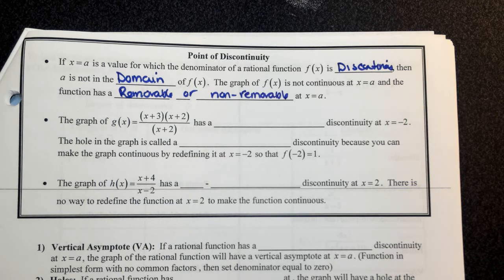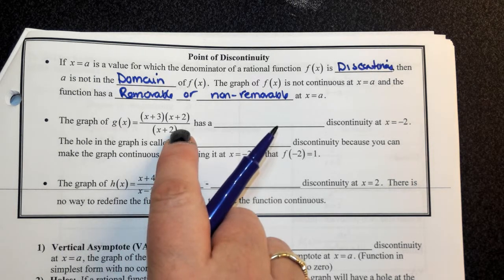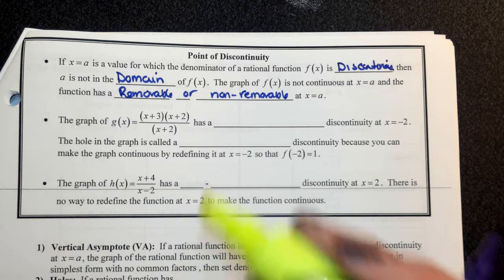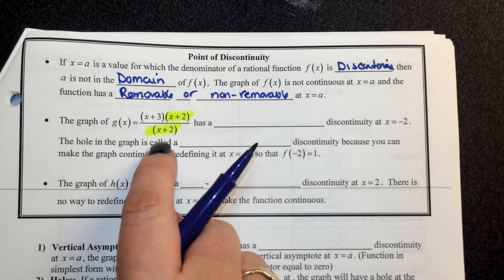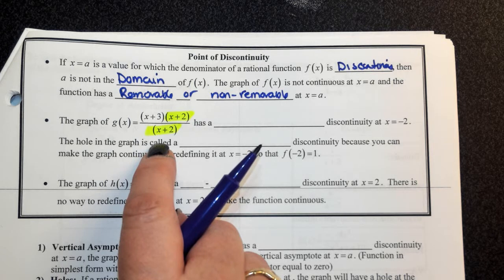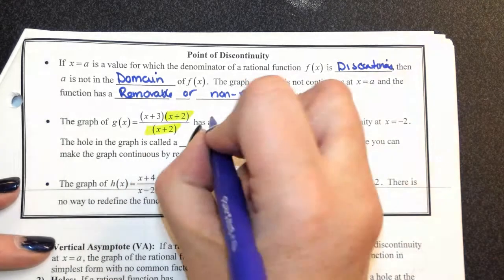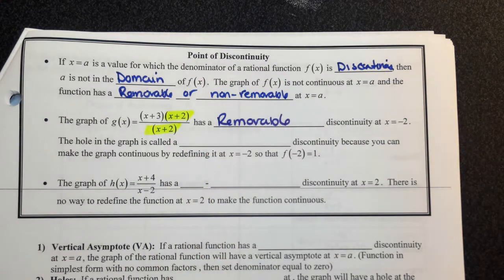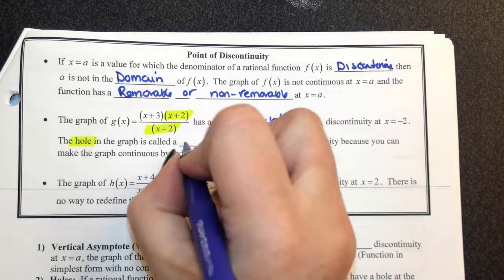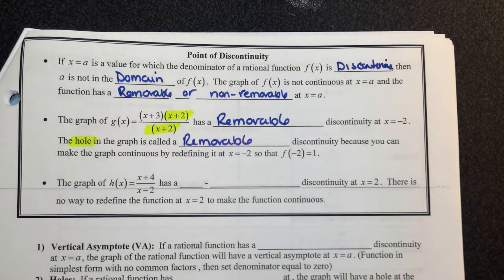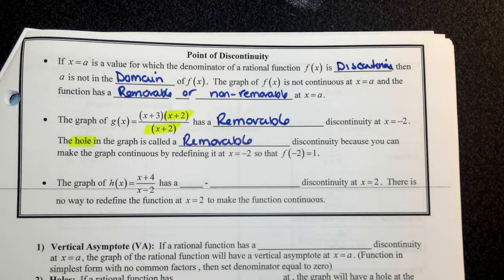There are two types of discontinuity: removable and non-removable. If a fraction has a common factor in the numerator and denominator, we know we could simplify it. But notice, we still have a value of zero that occurs in the denominator, so negative 2 cannot be in the domain. We call this removable discontinuity — there is a hole in the graph. This is called a removable discontinuity because you can make the graph continuous by filling in that point.